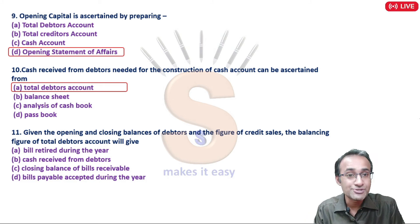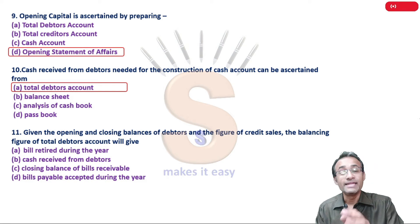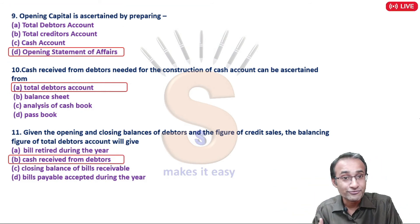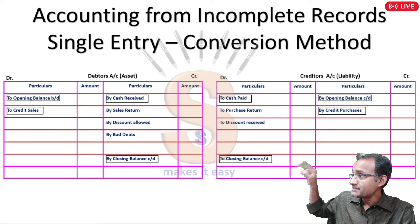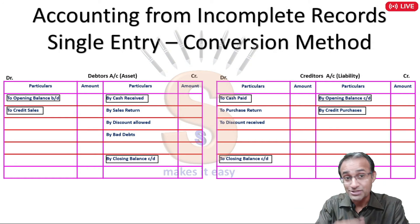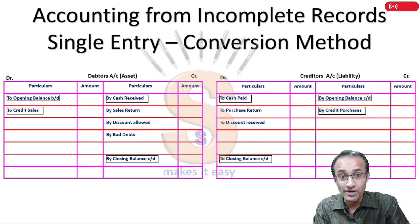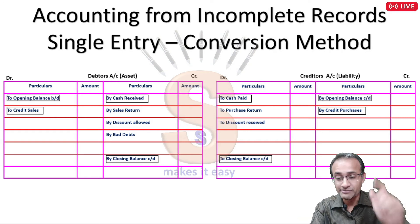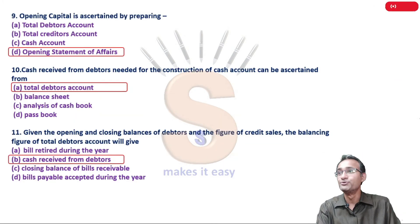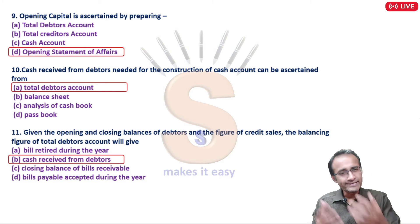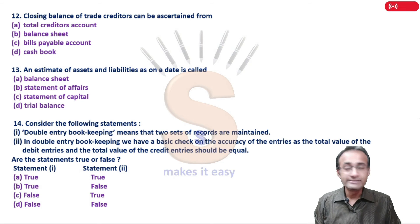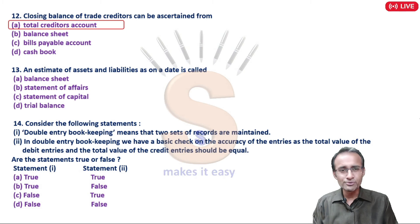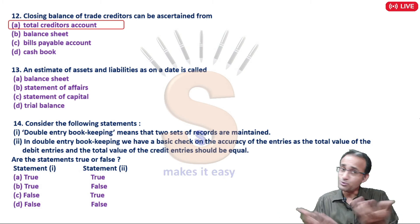Point eleven: Given the opening and closing balance of debtors and the figure of credit sales, the balancing figure of total debtors account will be cash received from debtors. In the debtors account, debit has opening balance and credit sales, credit has closing balance - if something is missing, the balancing figure will be cash received from debtors. Point twelve: Closing balance of trade creditors can be ascertained from the creditors account - from opening balance, purchases, and cash paid, you will find the closing balance.